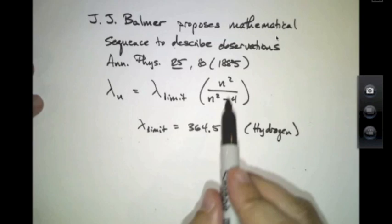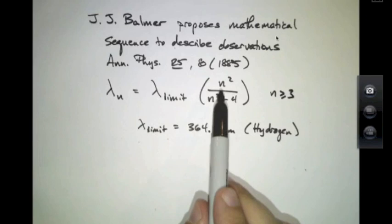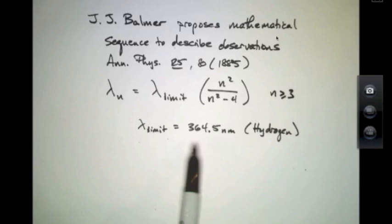It was a sequence of wavelengths that had an asymptotic value and characterized by an integer n greater than or equal to 3. So for any integer plugged into this formula, one could get one of the allowed values for wavelengths emitted from, in this case, hydrogen. It's hydrogen when it has this particular value of the limit or asymptotic wavelength.